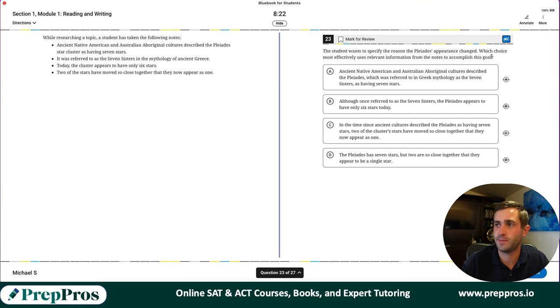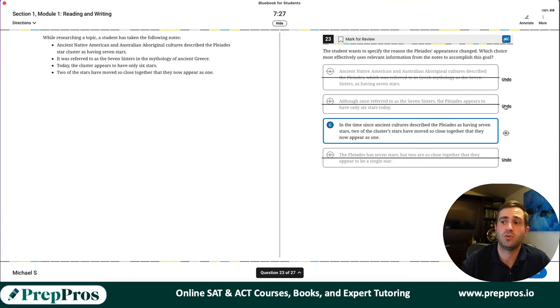Student wants to specify the reason that the Pleiades appearance changed. Ancient Native American and Aboriginal cultures describe the Pleiades star clusters having seven stars. Today the cluster appears to only have six stars. Two of the stars have moved so close together that they now appear as one. So we're specifying why it changed. In the time since the ancient cultures describe the Pleiades as having seven stars, two of the stars' clusters have moved so close together that they now appear as one. This should be our right answer. It's really simply because that's the only one that's specifying and using this information here in the most effective manner to do that.